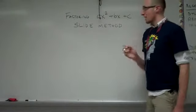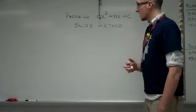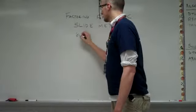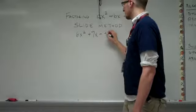Now I'm not really sure how this method works, but it works every time, so bear with me. Let's say we have an example where it says 6x squared plus 7x minus 3.